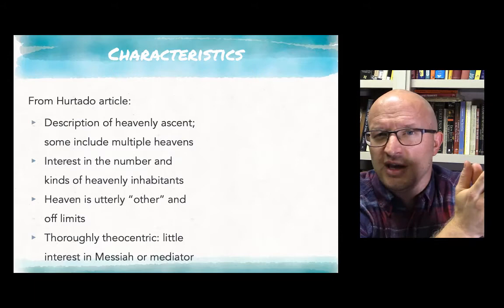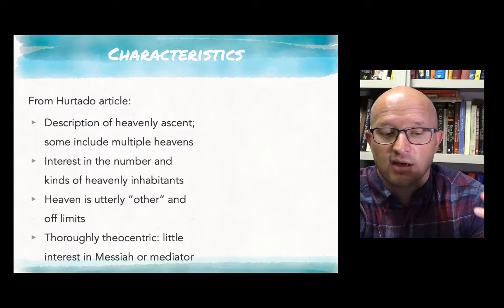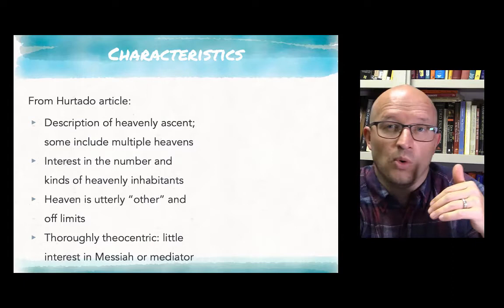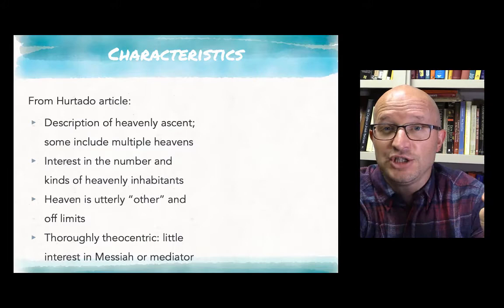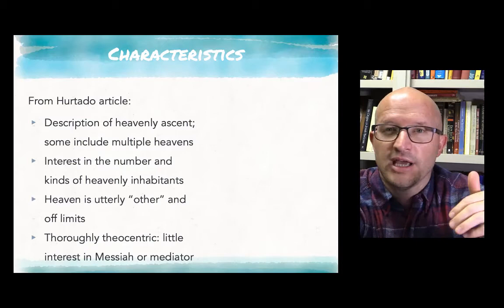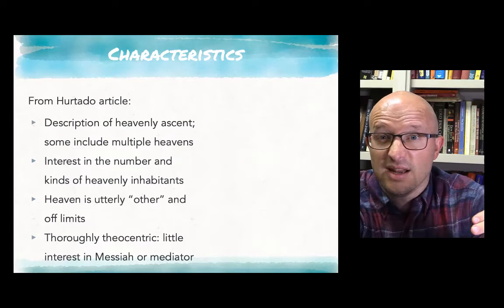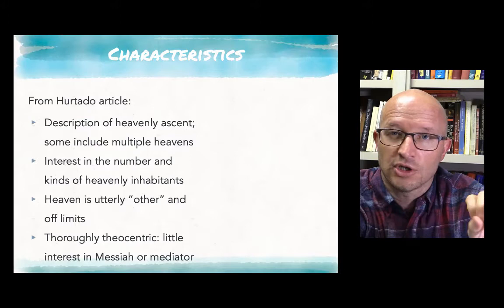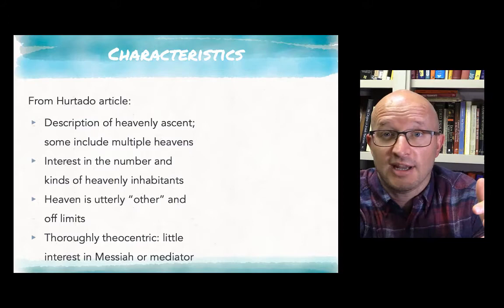The second characteristic of these traditions is an interest in both the number and the kind of heavenly inhabitants. There will be descriptions of angels or cherubim or otherworldly figures who are present in heaven. A third characteristic is that heaven is presented as utterly other and off limits to the seer. Sometimes the seer falls down as if dead—it's as if the holiness or otherness of heaven is so much that it almost instantly kills the seer, or causes the seer to collapse in a heap in mourning because of fear of loss of life.